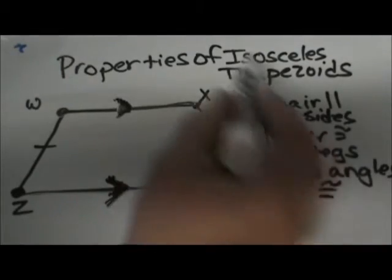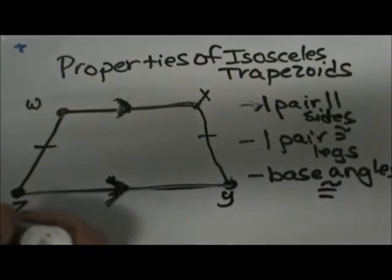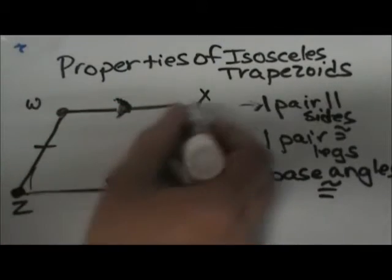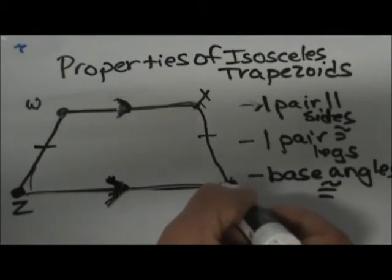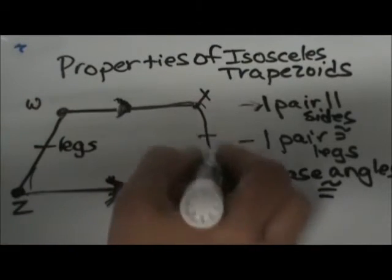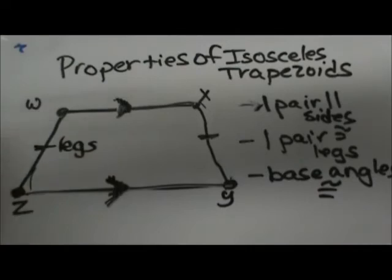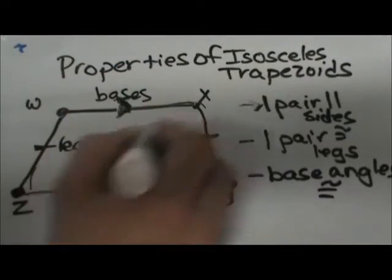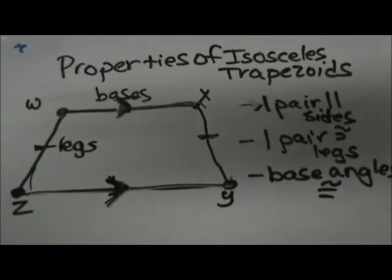Since it is an isosceles trapezoid, we have one pair of congruent legs. These two sides that are not parallel to each other are actually called legs and they are the same length, so they are congruent to each other. These are our bases. The bases are the sides that are parallel and the legs are the non-parallel sides.